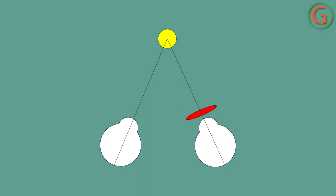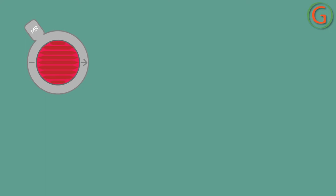The Maddox rod is a haploscopic test that gives one eye one image and the other eye a different image. To perform the Maddox rod test, you need a Maddox rod, a light source, a trial frame, and base in and base out prisms.